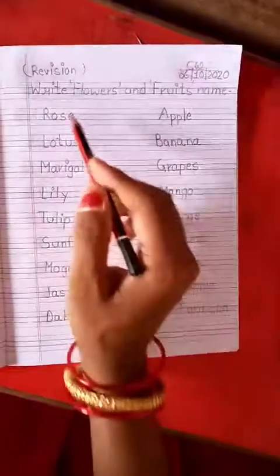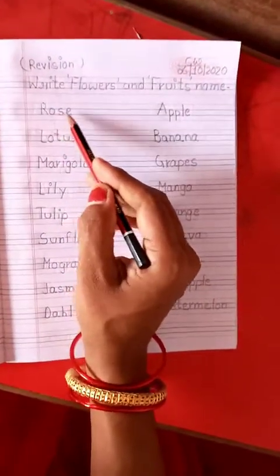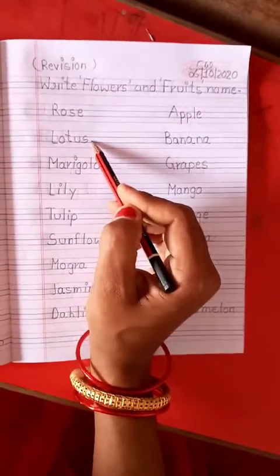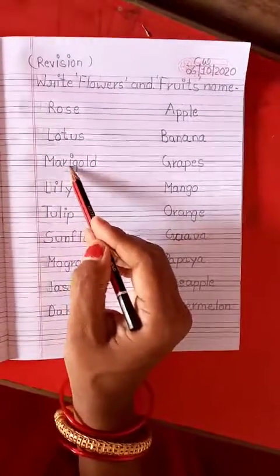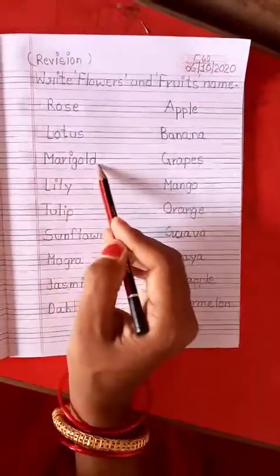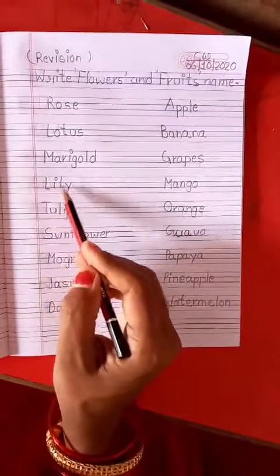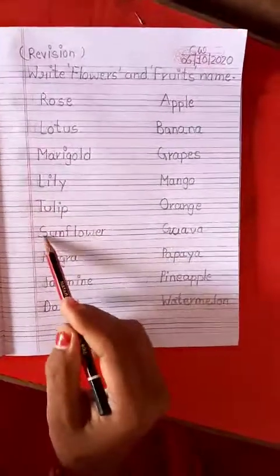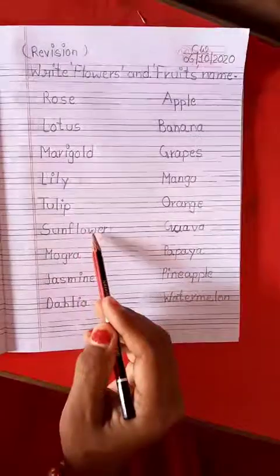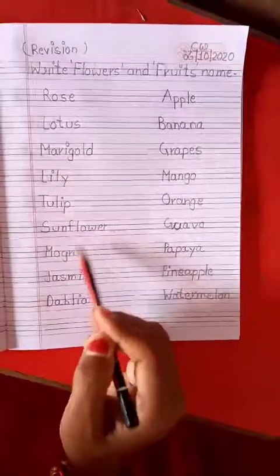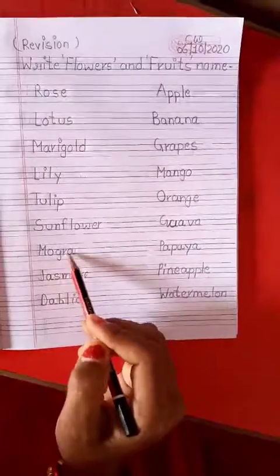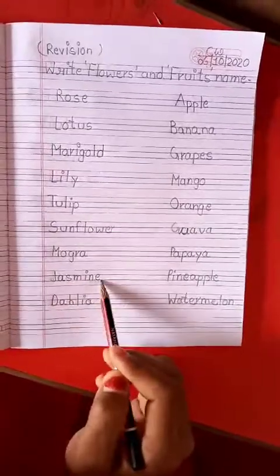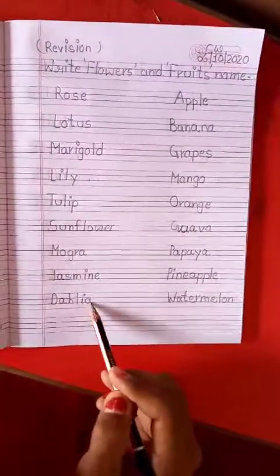Now let's read them. R, O, S, E. Rose. L, O, T, U, S. Lotus. M, A, R, I, G, O, L, D. Marigold. L, I, L, Y. Lily. T, U, L, I, P. Tulip. S, U, N, F, L, O, W, E, R. Sunflower. M, O, G, R, A. Mogra. J, A, S, M, I, N, E. Jasmine. D, A, H, L, I, A. Dahlia.